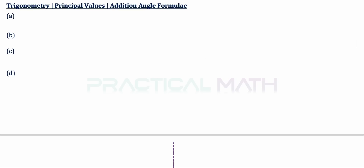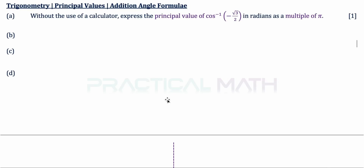In part A of this question, without the use of a calculator, express the principal value of cosine inverse of negative root 3 over 2 in radians as a multiple of pi. That is a one mark question.